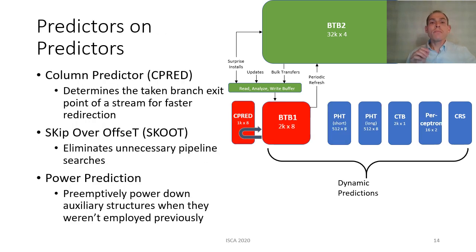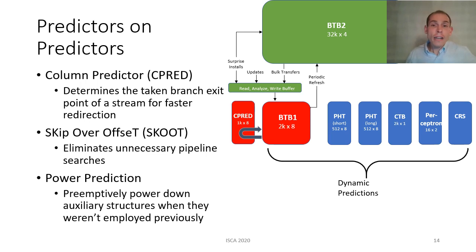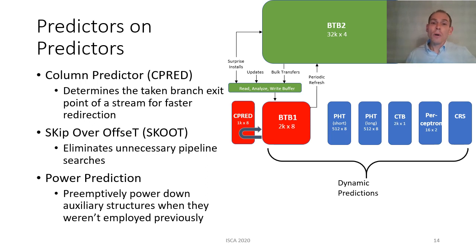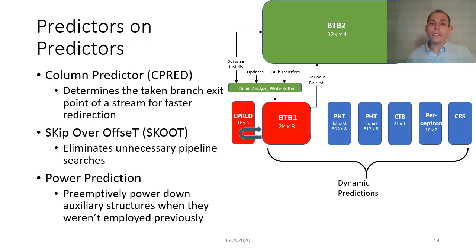We even have predictors on predictors to help accelerate throughput and conserve power. The column predictor allows faster re-indexing of the B2B1 by identifying the line where the exit point (DGT) would be. Sometimes there are simply no branches within a line being searched. The skip-over-offset mechanism (SCOOT), stored as metadata for each branch in the B2B1 and also in the CPRED, allows redirection to skip over lines known to have no branches, eliminating unnecessary pipeline searches. For any stream that doesn't require the PHT, perceptron, or CTB, the CPRED can power down these structures if they are not needed for the next stream.